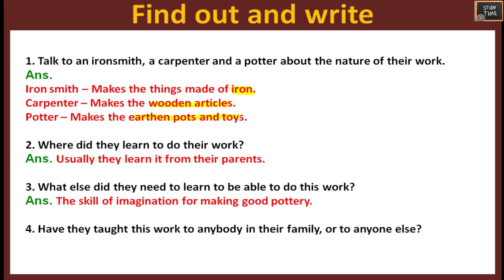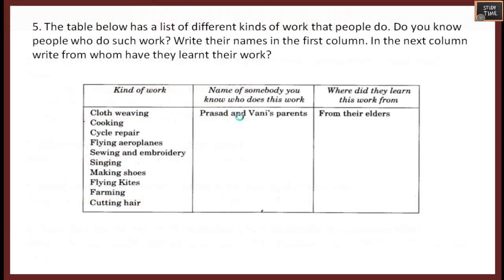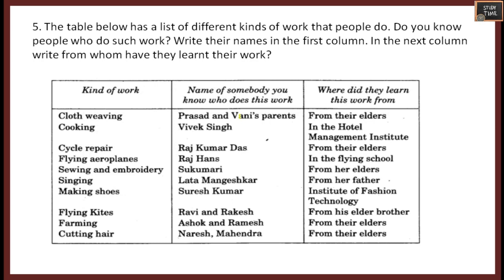The table below has a list of different kinds of work that people do. Do you know people who do such work? Write their names in the first column, and in the second column write from whom they have learned their work. The list includes: cloth weaving, cooking, cycle repair, flying aeroplanes, swimming, embroidery, singing, making shoes, flying kites, farming, and cutting hair. Fill in the name of the person and where they learned from — either from elders, parents, or a management institute.